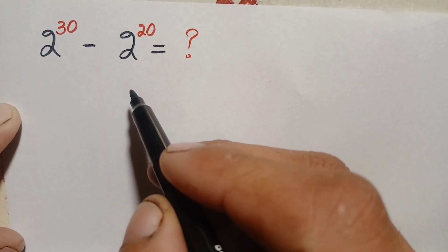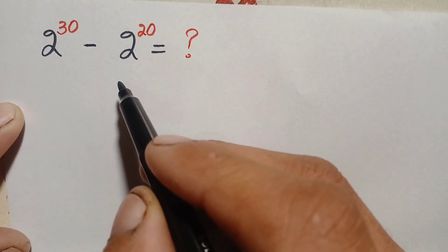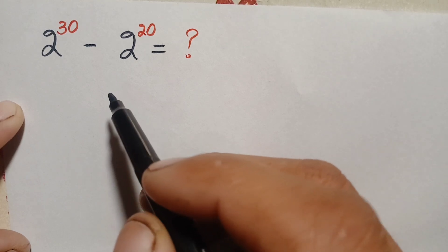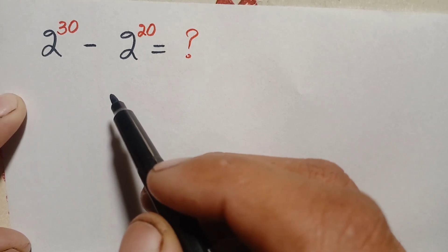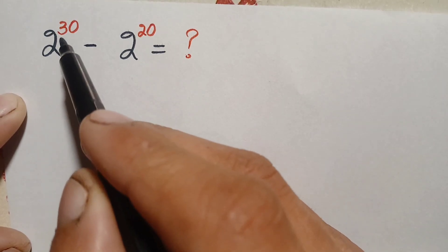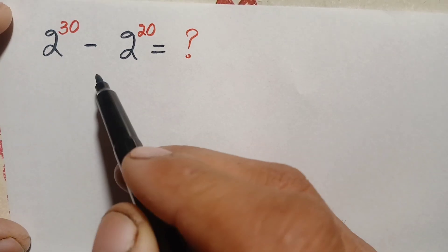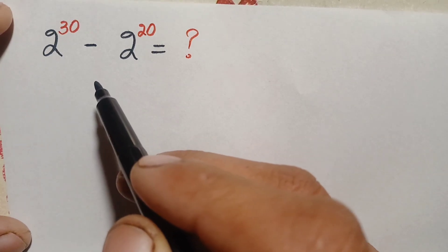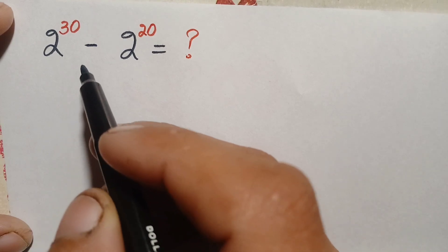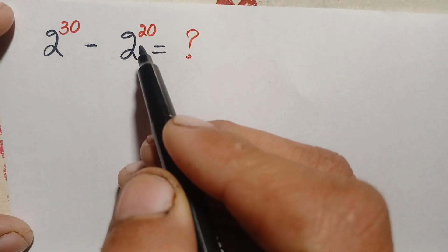Hello everyone, welcome. How to solve this nice and interesting exponential math problem without using a calculator and without any standard multiplication: 2 raised to power 30 minus 2 raised to power 20. We will try to solve this problem without using any calculator. First of all, we will try to factorize the powers 30 and 20.